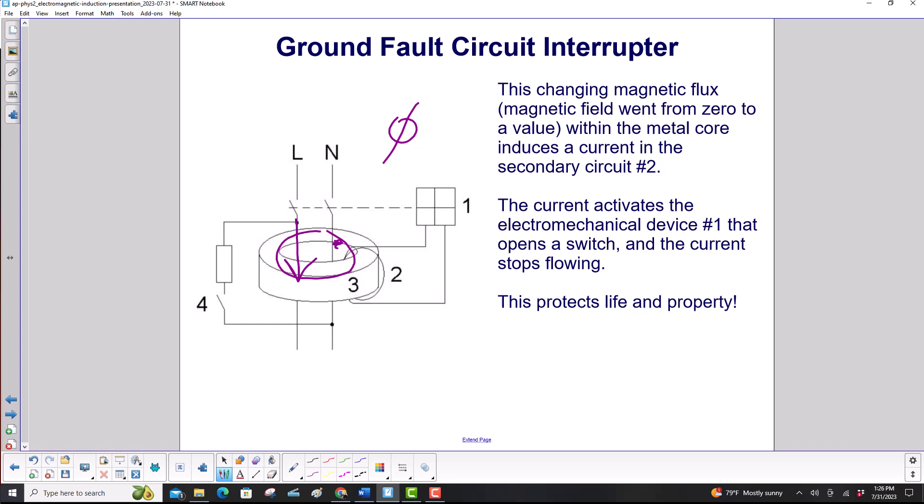A changing magnetic flux within the metal core induces a current in our secondary circuit here. The current activates the electromechanical device that opens the switch, and the current stops flowing. And all of this business is incorporated into that little GFCI outlet. So it's canceling the circuit right at the source of where your plug is. This protects life and property.